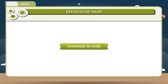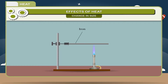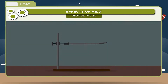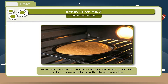Change in size: when a body is heated an expansion occurs in it. The expansion of a body due to heating is called thermal expansion. When a material is cooled it contracts. Heat also accounts for chemical changes which are irreversible and form a new substance with different properties.